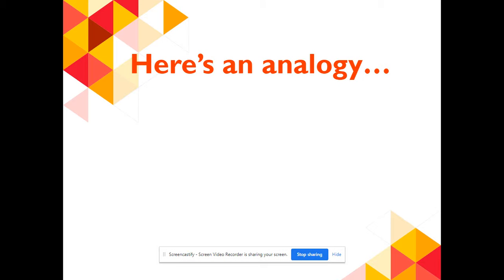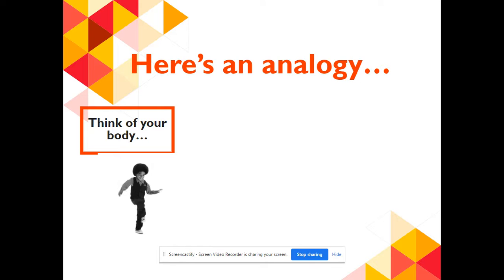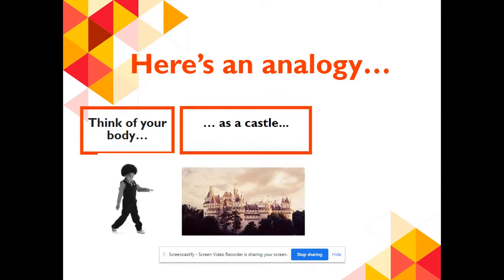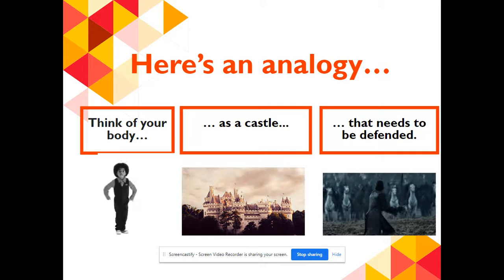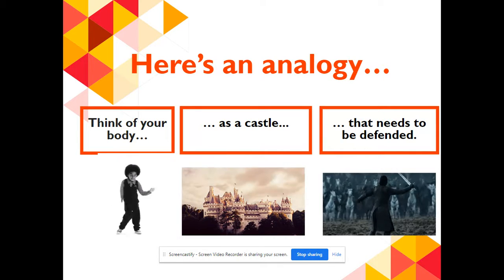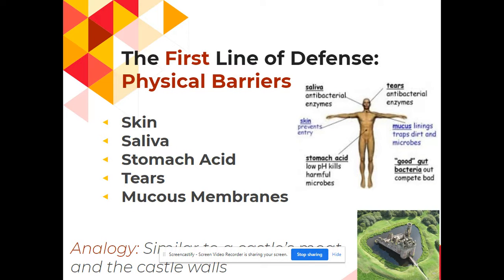We're going to look at an analogy — comparing two unrelated things. We're going to think of our body and our immune system as a castle that needs to protect the people inside. Our first line of defense would be our physical barriers. This is a non-specific type of immune response. Our skin is our biggest organ, covering the external part of our entire body, making it our biggest defense mechanism.